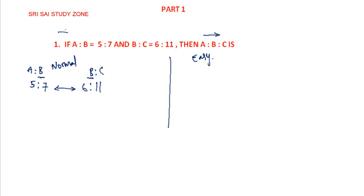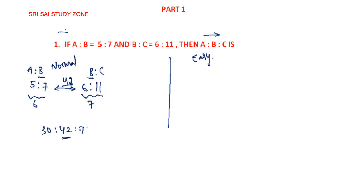We multiply to get the LCM. 6 times 7 gives 42. So we will have 42. 6 times multiplication, 7 times multiplication — we get the same number. 6, 5 gives 30; 6, 7 gives 42; 7, 6 gives 42; 7, 7 gives 77.